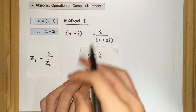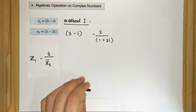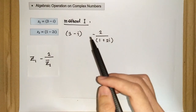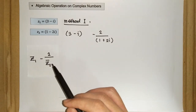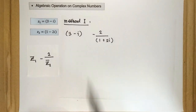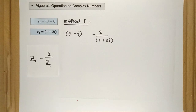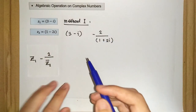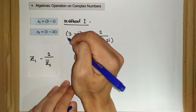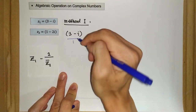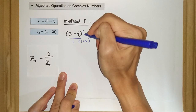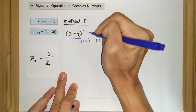The same idea applies in Method 1 here. We have z1 as 3 minus i, minus 2 over z2 bar, which is 1 plus 2i. The first step is to make the denominator for both terms equal. Since 3 minus i is over 1, we multiply it by 1 plus 2i, and the numerator also by 1 plus 2i.